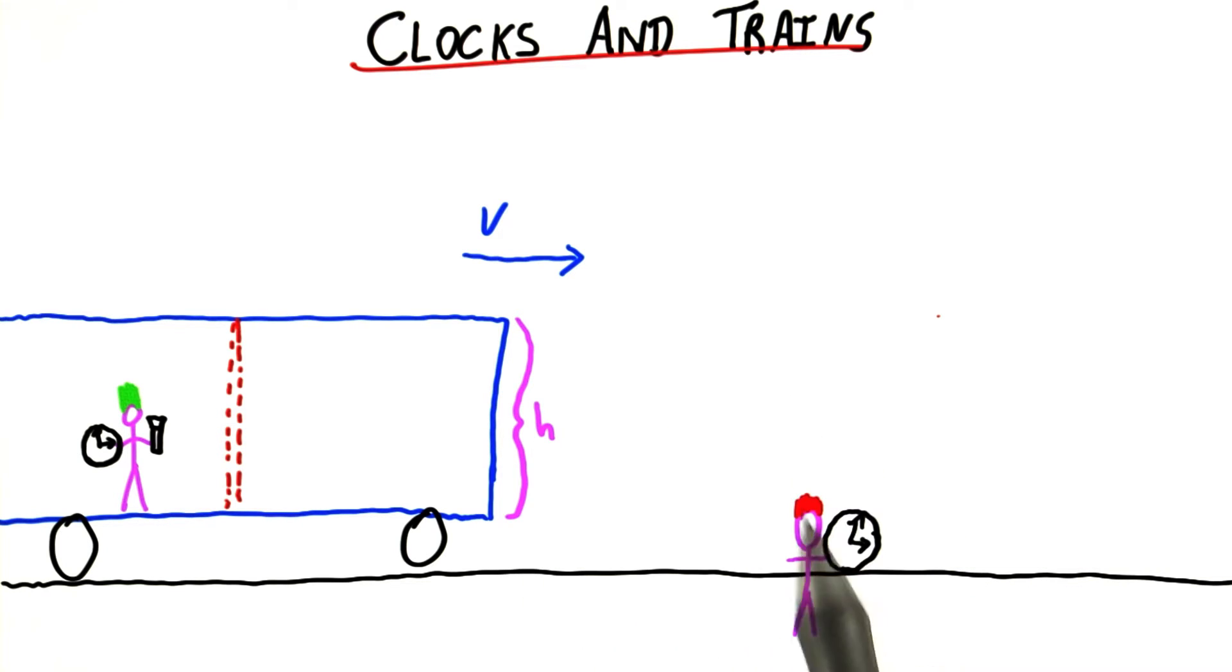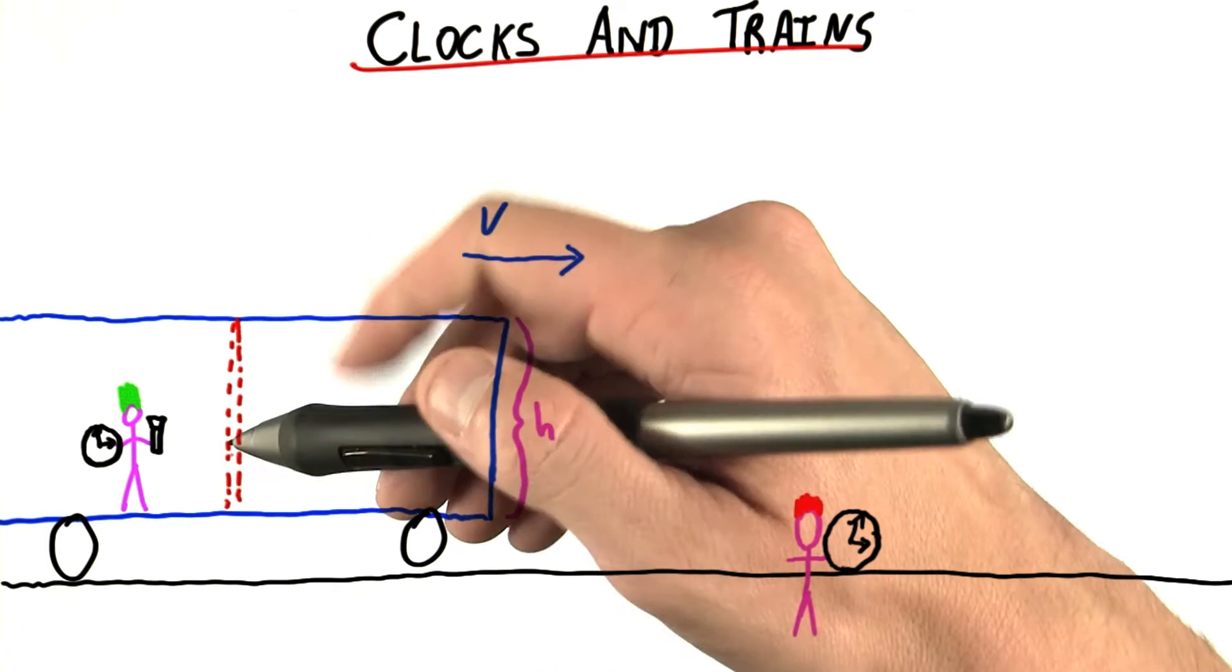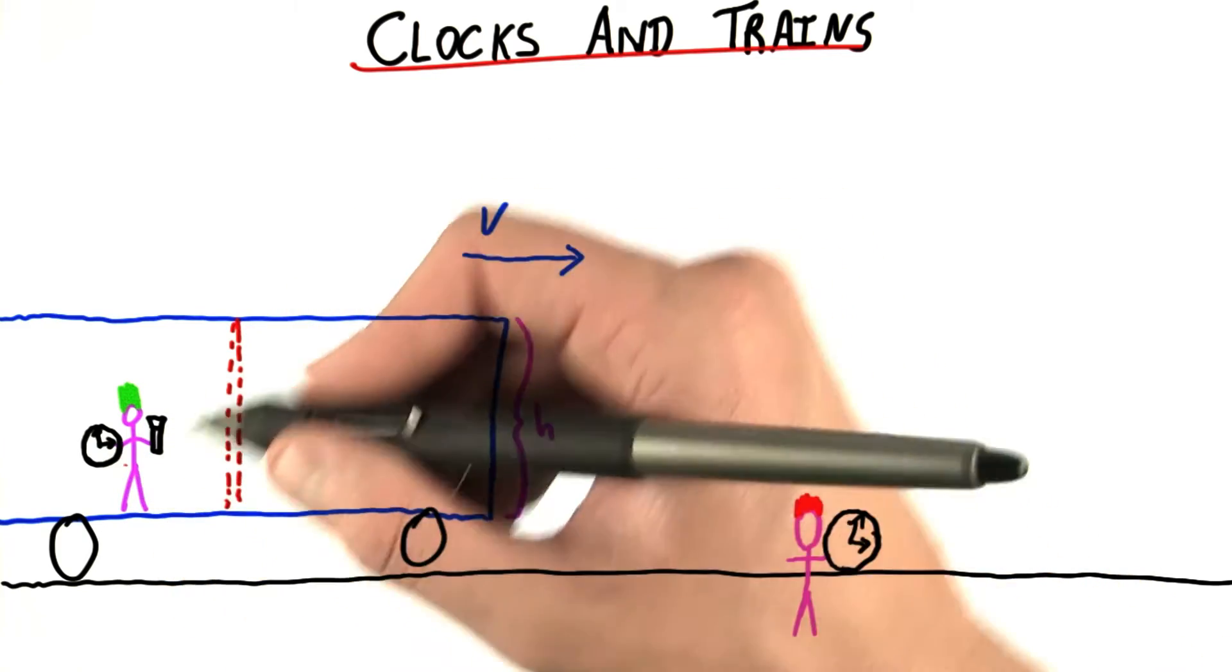Now that we're studying relativity, we have to really think about whose point of view we're solving the problem from. First, let's think about the train point of view. From the point of view of the train,